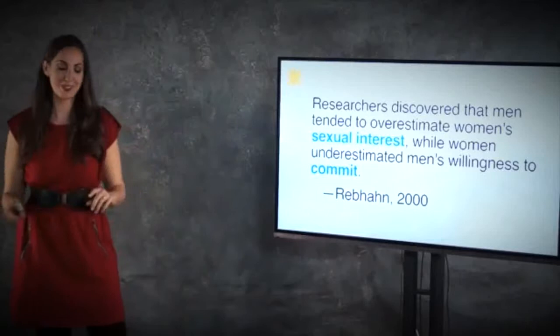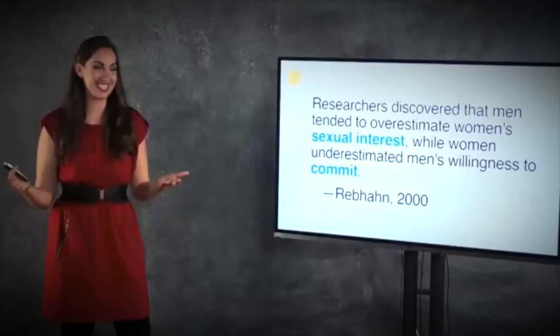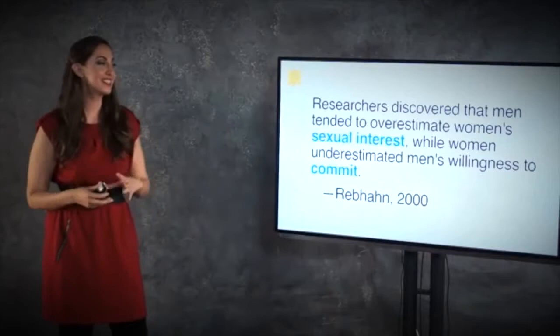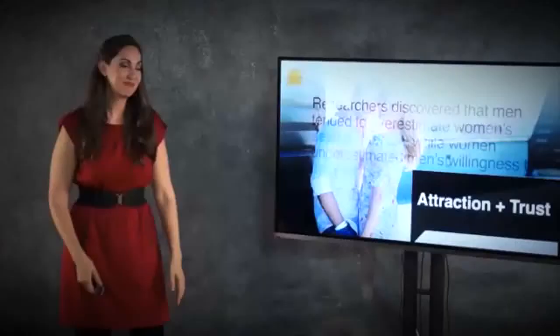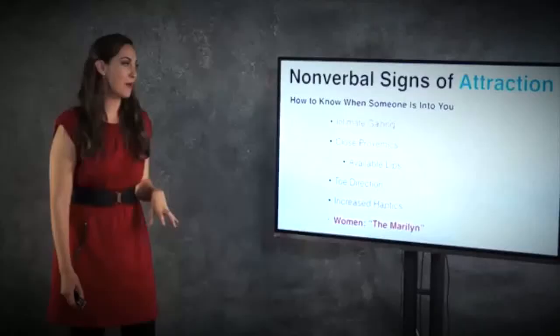Researchers discovered that men tended to overestimate a woman's sexual interest while women underestimated a man's willingness to commit. How many people did this shock? Absolutely no one. But I wanted to show you that it is actually backed up in the research. They have actually found that these are where the two areas the couples both disagree. And so this section, I'm going to try to show you how we can autocorrect for those overestimates and underestimates. And hopefully we get it just right.